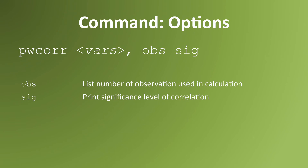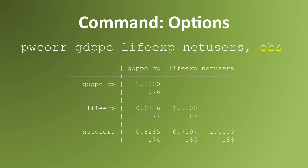There are at least two options you can use with the pwcorr command. The option OBS is for observations — it asks Stata to report how many observations were used in calculating the pairwise correlation. This is useful because sometimes we don't realize we're making inferences based on really small sample sizes. It's always good to run it with the OBS option once. This example shows that these pairwise correlations are calculated between 171 and 188 observations.